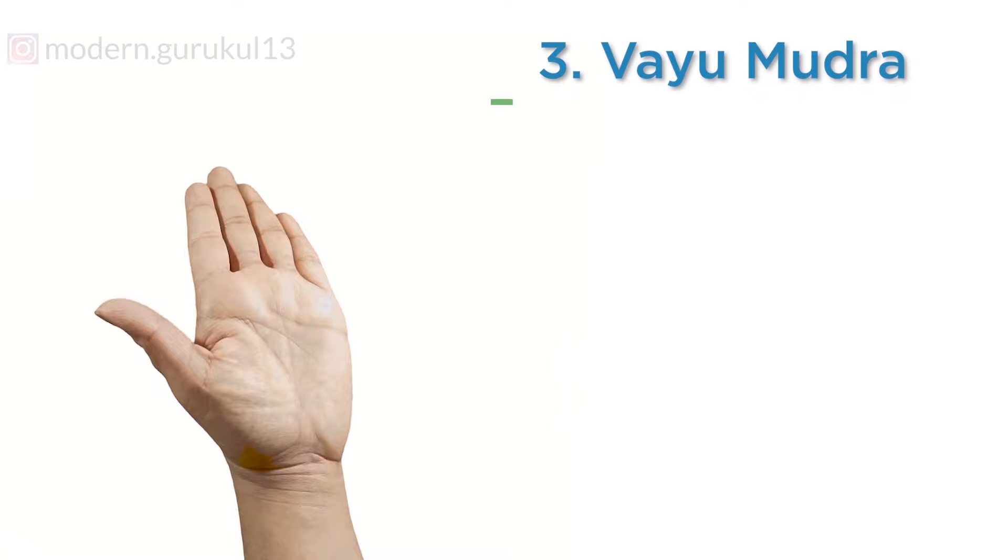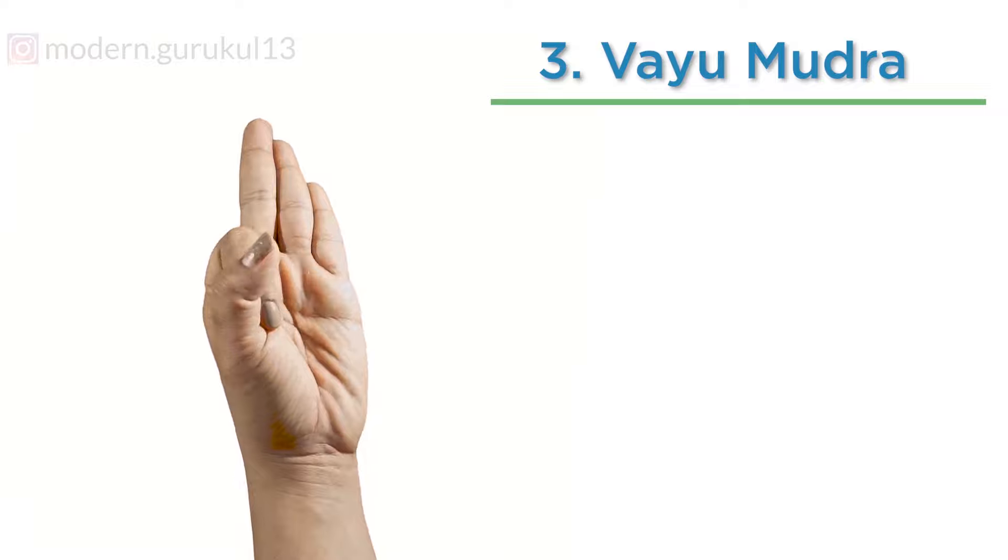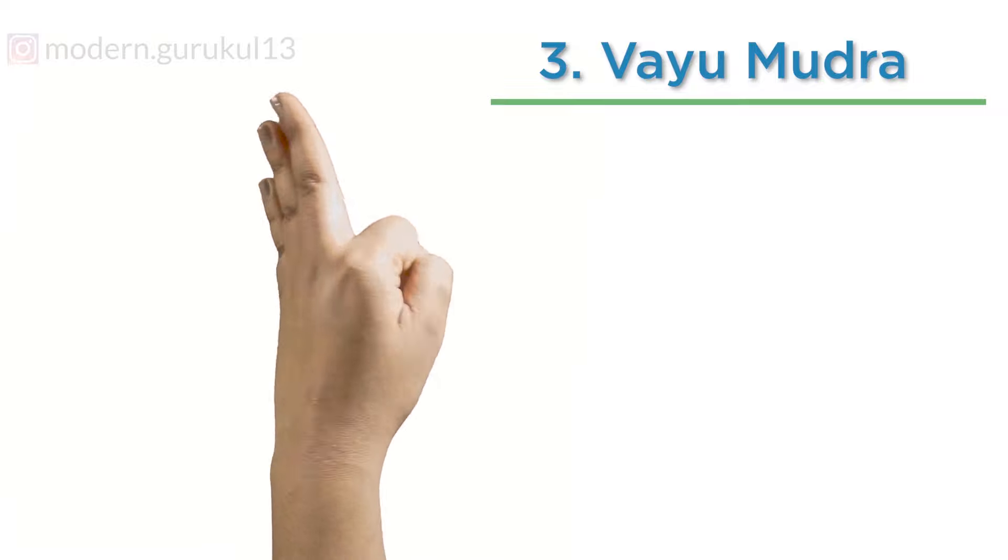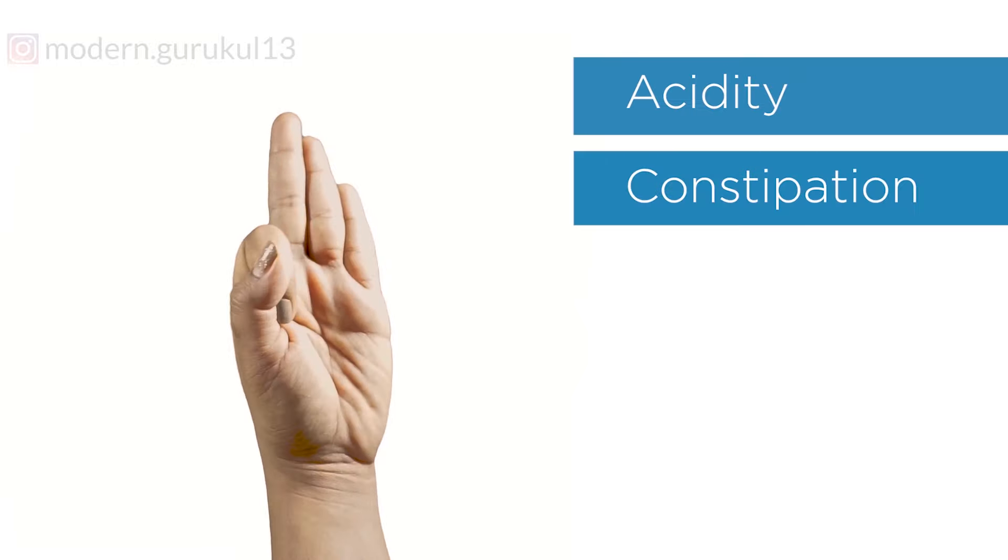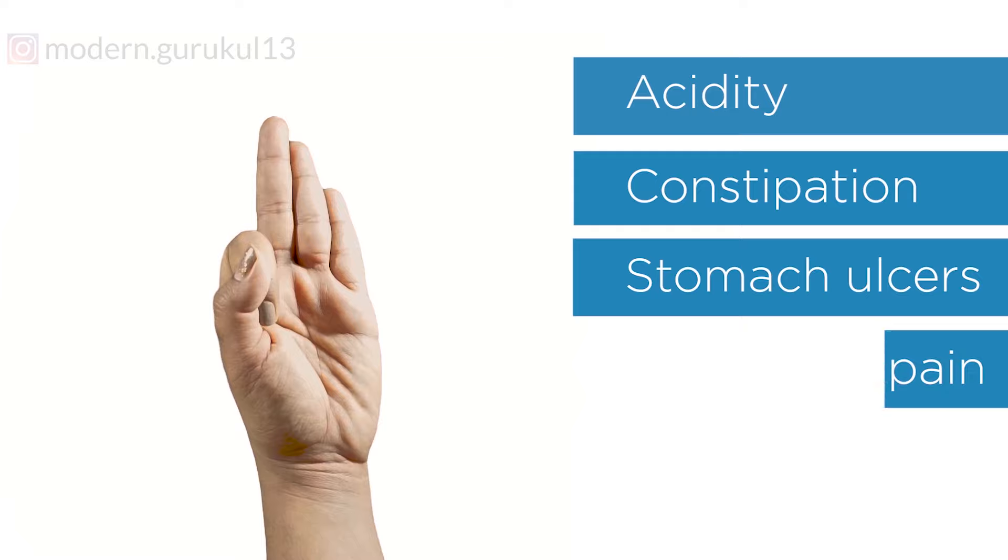Vayu Mudra: Fold index finger and press it with a thumb and other fingers are pointing outwards. Vayu Mudra helps with stomach related problems like acidity, constipation, stomach ulcers, and it also cures joint pain.